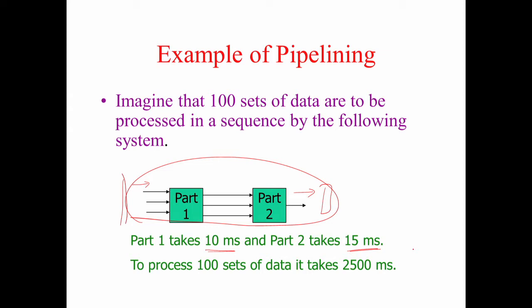So this circuit has Part 1 at 10 milliseconds and Part 2 at 15 milliseconds. Total time is 25 milliseconds for processing one set of data, and for 100 sets of data it will take 2500 milliseconds.